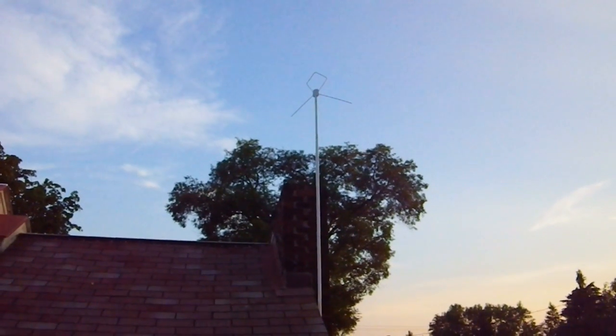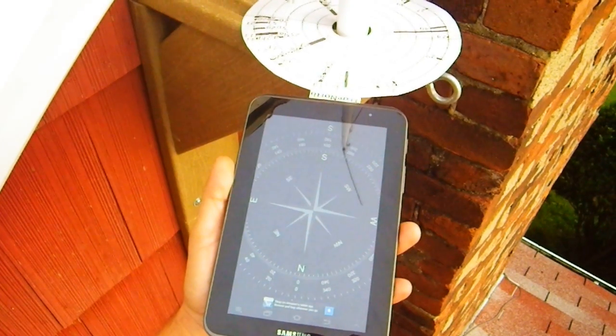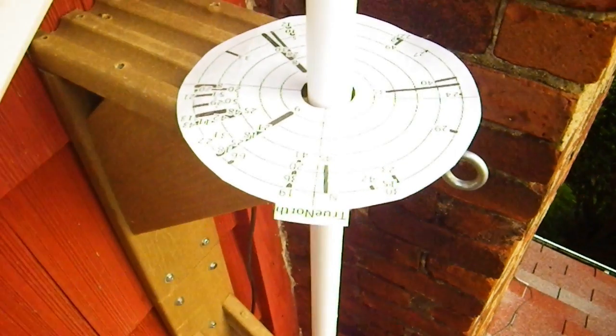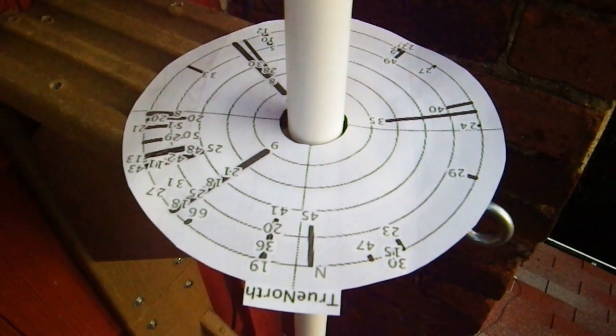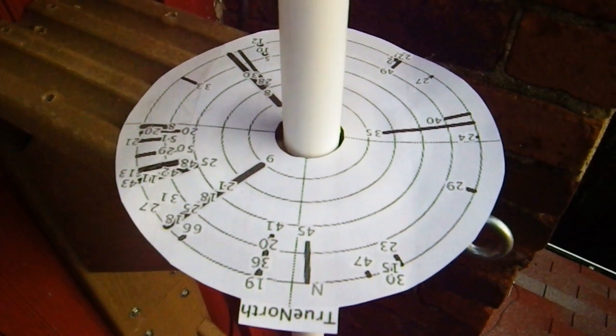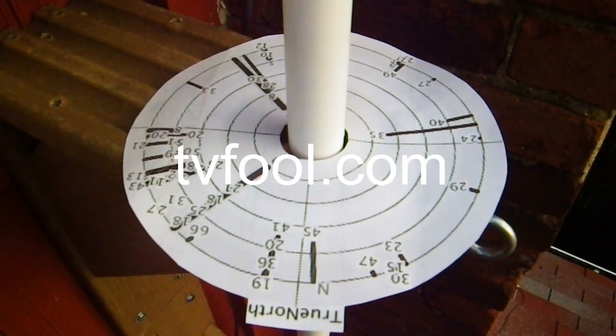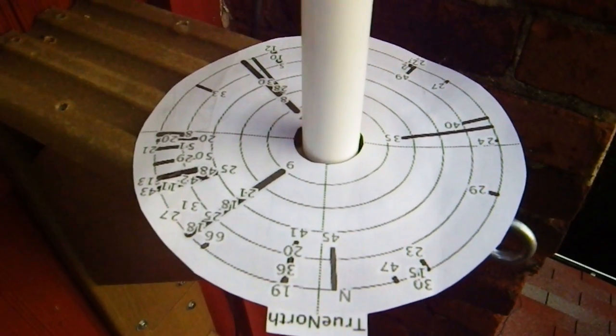There it is. I hook it up in the house and point it. So if I use a compass or a compass app, and I print out this thing that tells me where my channels are from TV Fool, I can use that to point my antenna and get the maximum number of stations.